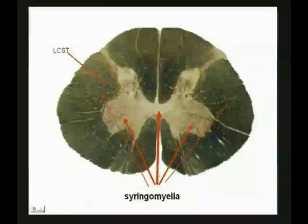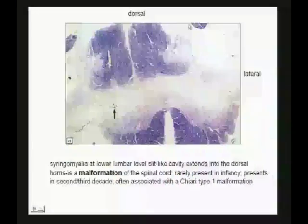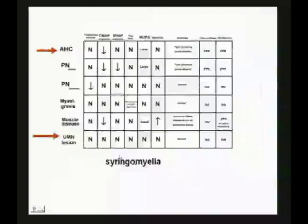Syringomyelia is a maldevelopment of the spinal cord. You can see this slit-like dead area in the midline — here's dorsal, ventral, and midline. You can see how it gets the crossing fibers, some ventral horn cells, and can move into the lateral corticospinal tract. Syringomyelia can give upper motor neuron problems where you don't have the classic electrodiagnostic findings, and anterior horn problems where you get classic re-innervation, increased MUPs, and things like that.